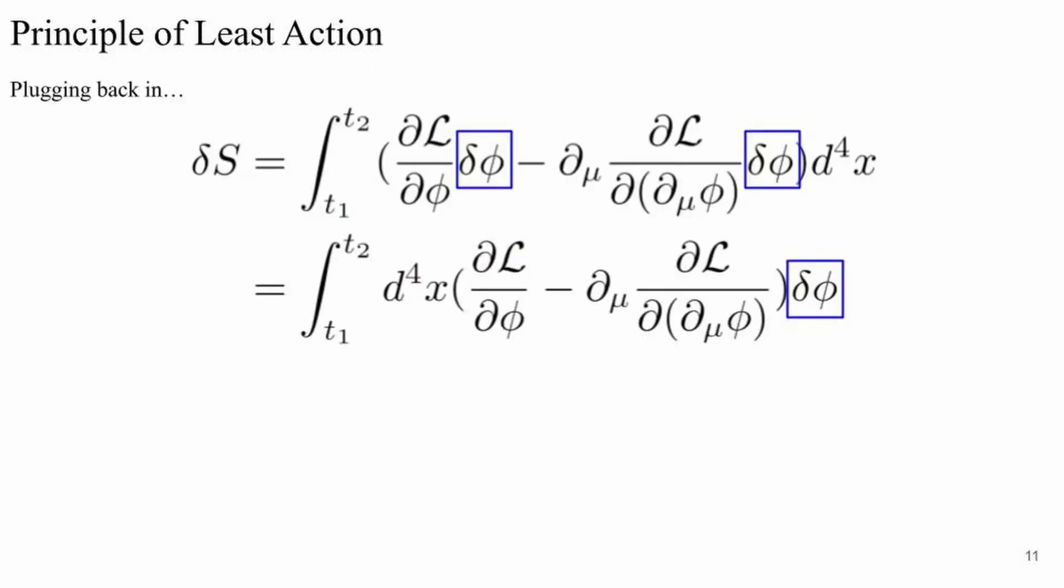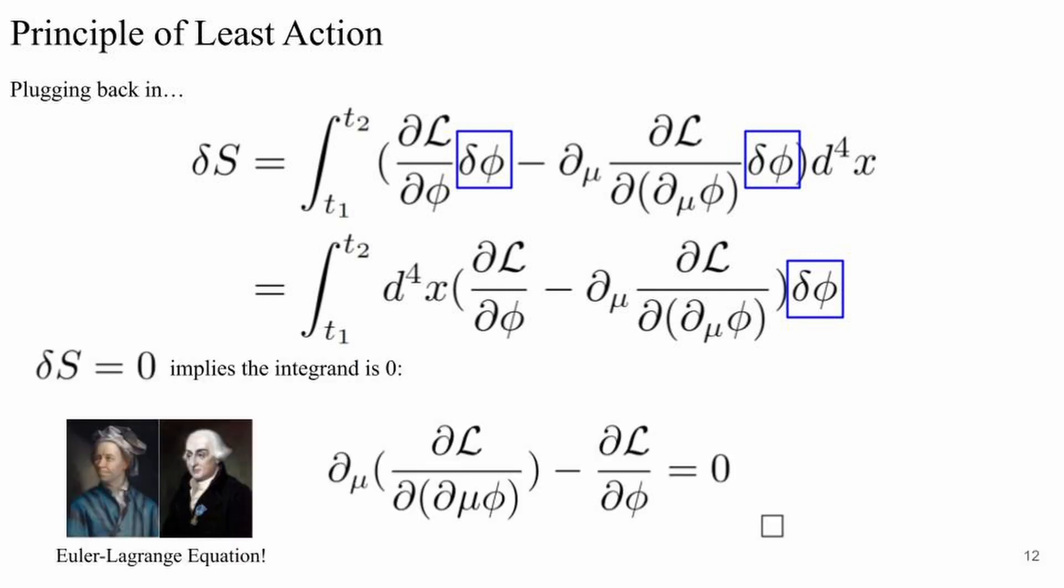Now it's smooth sailing. We take our result and plug it back into our equation for the functional derivative of the action. We're left with two terms in the integrand, both being multiplied by a factor of delta phi. If we want our action to be an extremum by the principle of least action, we impose that the functional derivative of the action must be zero, which implies that the integrand must be equal to zero. Applying this result, we derive the Euler-Lagrange equations, which are the equations of motion for a field.